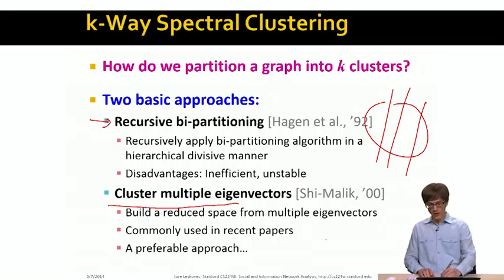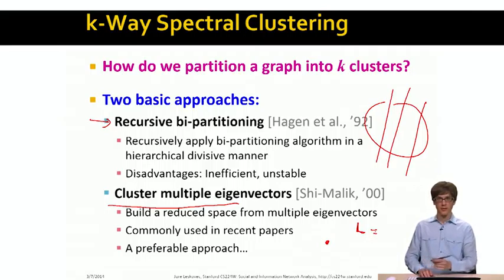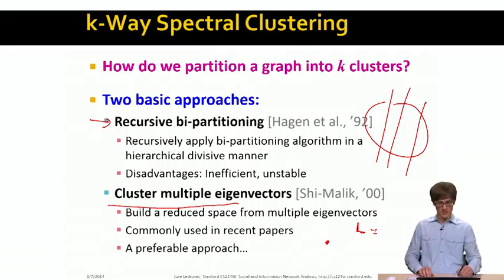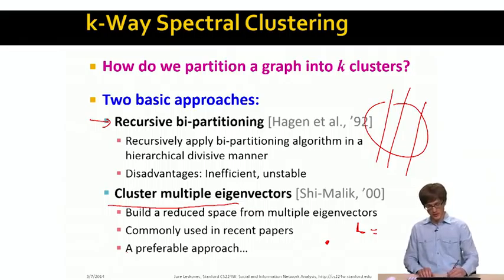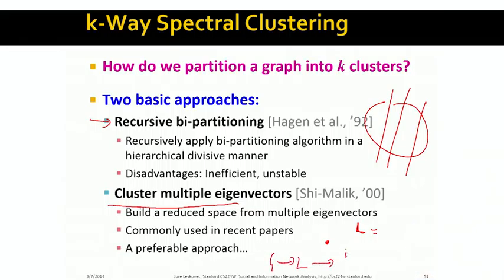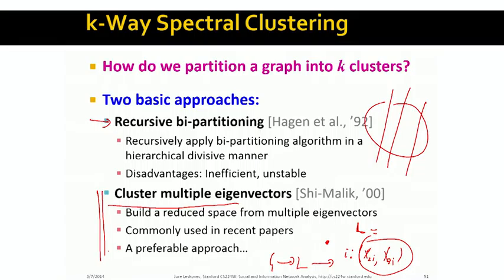Another idea is to cluster using multiple eigenvectors. For every node in the graph, we take our Laplacian matrix, compute the eigenvalue decomposition, and take the second eigenvector, third eigenvector, fourth eigenvector, and so on. This means every node is now described by a small vector of coordinates — the i-th coordinate of the second smallest eigenvector, the i-th coordinate of the third smallest eigenvector, and so forth. We can then apply k-means to identify k clusters. In practice, this method works really well. With this, we have finished the discussion of spectral clustering and how to find individual clusters of nodes in a graph.